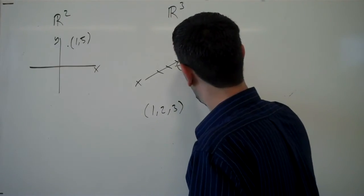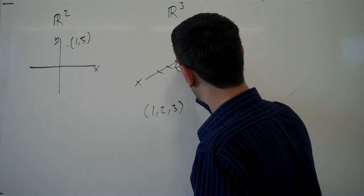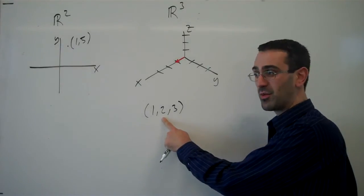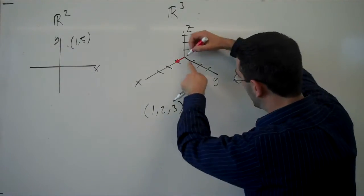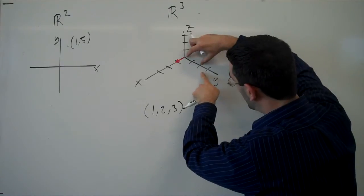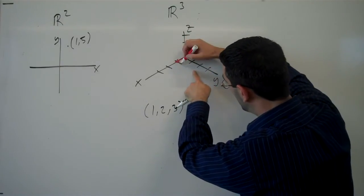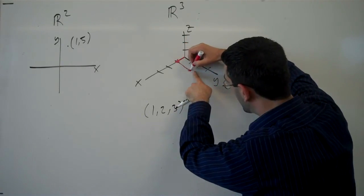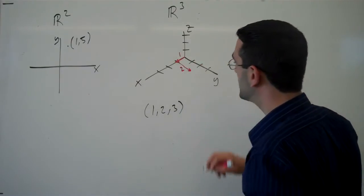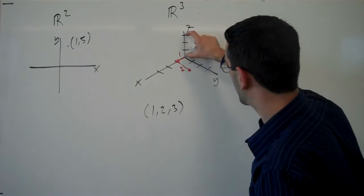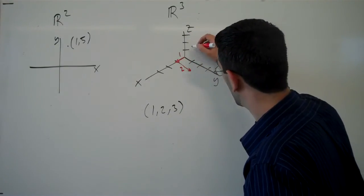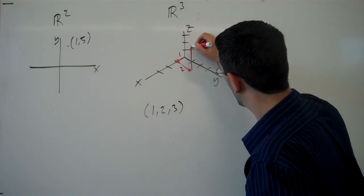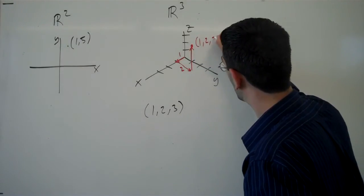So 1 in the x direction would say go this way, 1. Now we need to go 2 in the y direction. And in the perspective drawing, that means I'm going to move parallel to the y axis a distance of 2. So there's 1 in the x direction, 2 in the y direction, and now 3 in the z direction. There's my point 1, 2, 3.